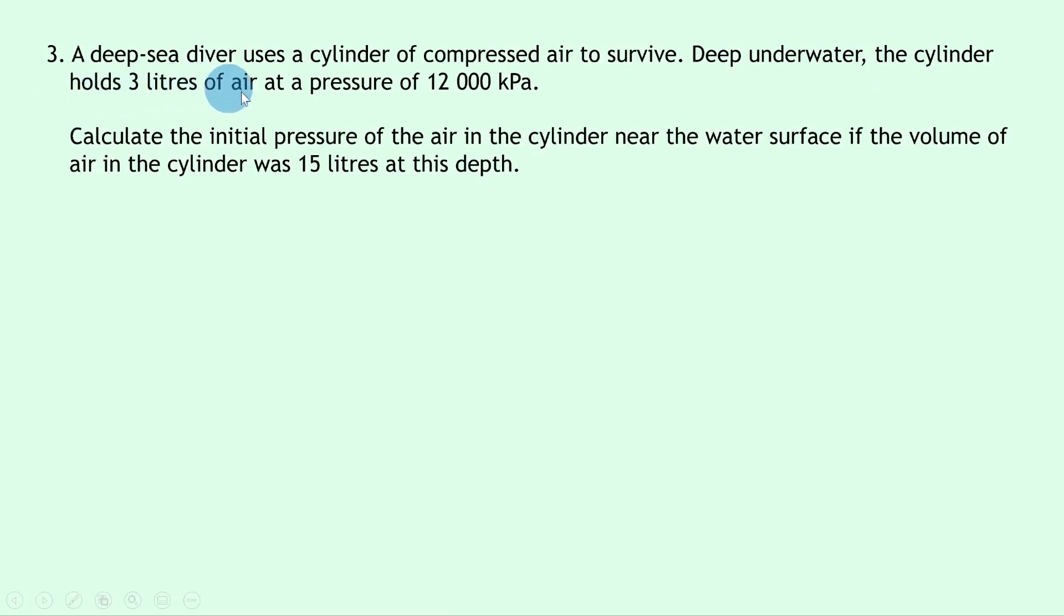Lastly, question 3 says that a deep sea diver uses a cylinder of compressed air to survive. Deep underwater, the cylinder holds 3 liters of air at a pressure of 12,000 kilopascals. Calculate the initial pressure of the air in the cylinder near the water's surface if the volume of air in the cylinder was 15 liters at this depth.